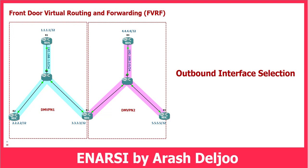Here we have a simple scenario with two DMVPN networks — two Dynamic Multipoint Virtual Private Networks. In the first DMVPN, we have Router 1 as the NHS and Routers 2 and 3 as the NHCs. In the second DMVPN, we have Router 4 as the NHS and Routers 3 and 5 as the NHCs. First we should talk about the problem, and after that we can talk about the solution.